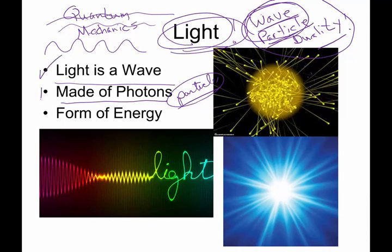Aside from being a wave and being made of these particles called photons, light is a form of energy. And this is the energy that actually powers the Earth. It is the heat and radiation that we get from the sun that actually keeps our planet warm.